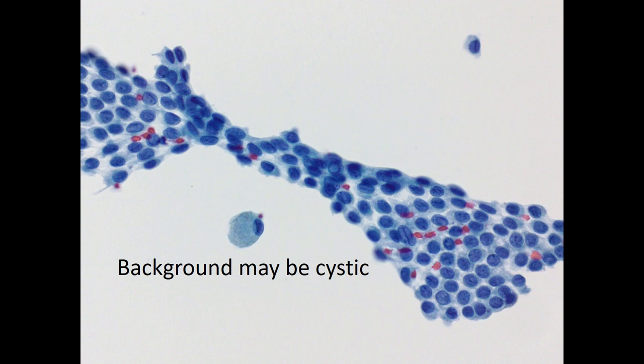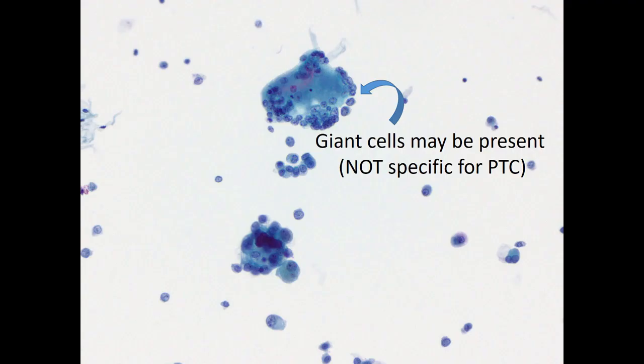In the background, you may have cystic change and giant cells as well, although this is not a feature specific for PTC.